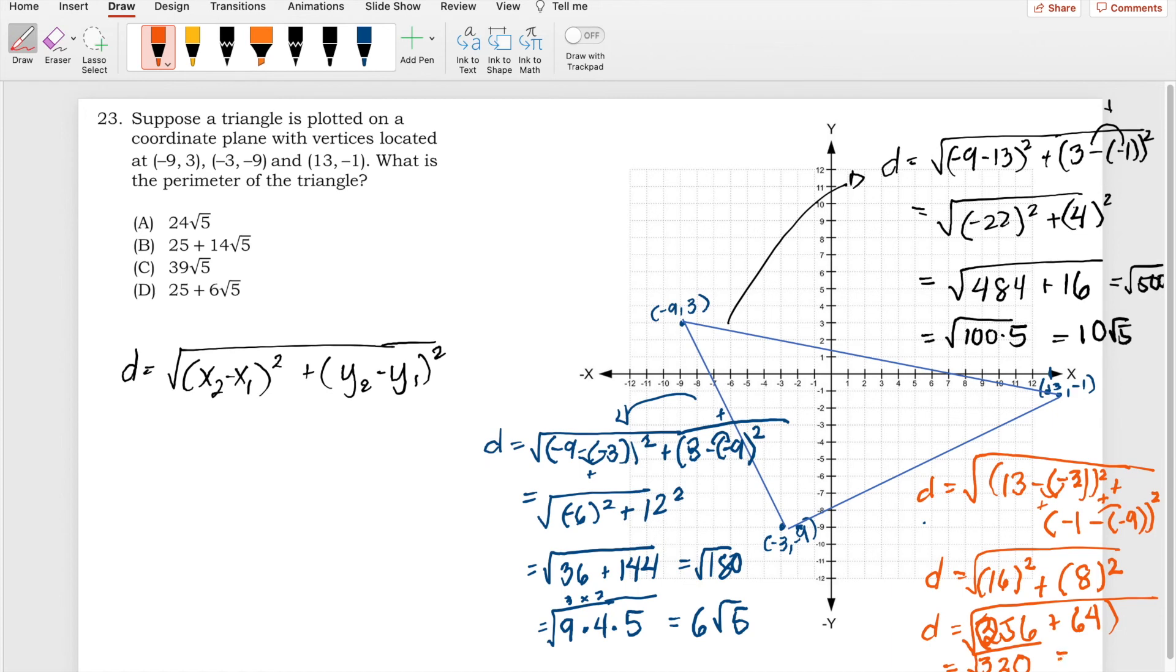And that is 64 times 5. We can factor out that with 64 times 5, I mean. So that will result to 8√5.